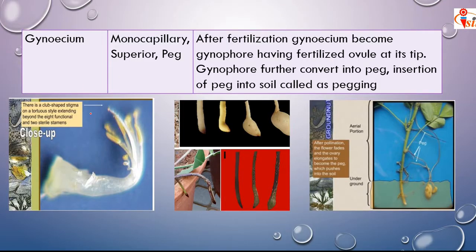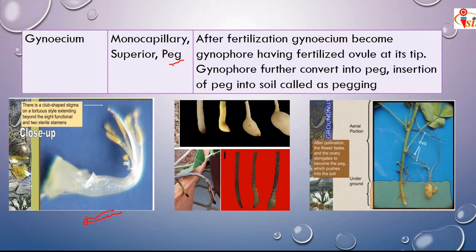The gynoecium is monocarpellary. In a monocarpellary gynoecium, the stigma, style, and ovary cannot be differentiated — they are of the same length. The condition of gynoecium is superior because calyx, corolla, and androecium arise below the ovary. After fertilization, the gynoecium becomes a gynophore bearing a fertilized ovule at the tip.